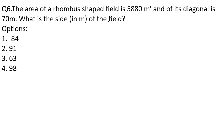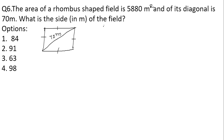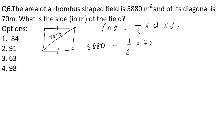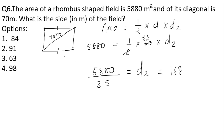Next question: the area of a rhombus-shaped field is 5880 m² and one of its diagonals is 70 m. What is its side in metres? We know the area of a rhombus = ½ × d1 × d2. So 5880 = ½ × 70 × d2. Solving, d2 = 5880 / 35 = 168 m.